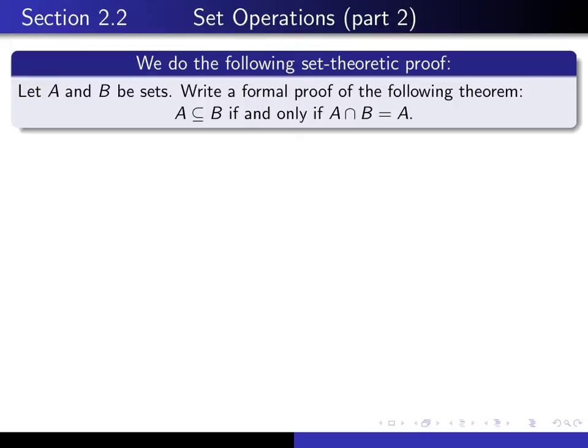This is part two in our series of lectures on section 2.2 on set operations. In this video, we're simply going to prove the following theorem about sets: if A and B are any two sets, then A is a subset of B if and only if A intersect B is equal to A.